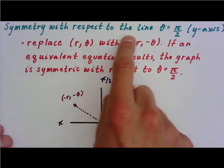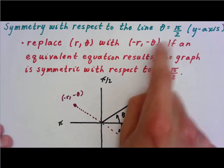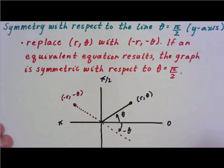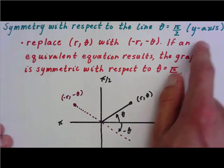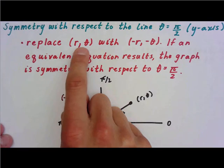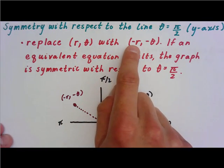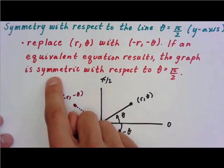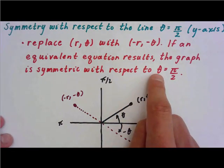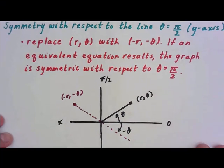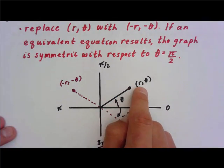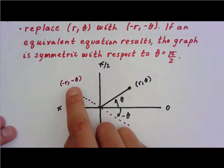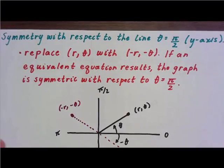The second type is symmetry with respect to the line theta equals pi over 2 — that's y-axis symmetry. In this case, you replace both r and theta with negative r and negative theta. If an equivalent equation results, the graph is symmetric with respect to the theta equals pi over 2 line. You can see it's a reflection: positive r and theta on one side, negative r and negative theta on the other.